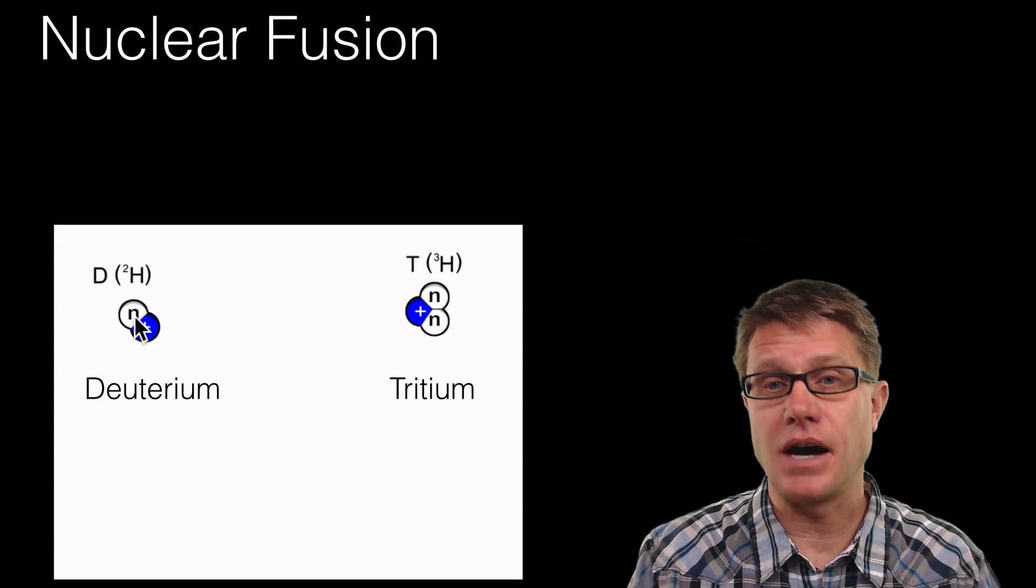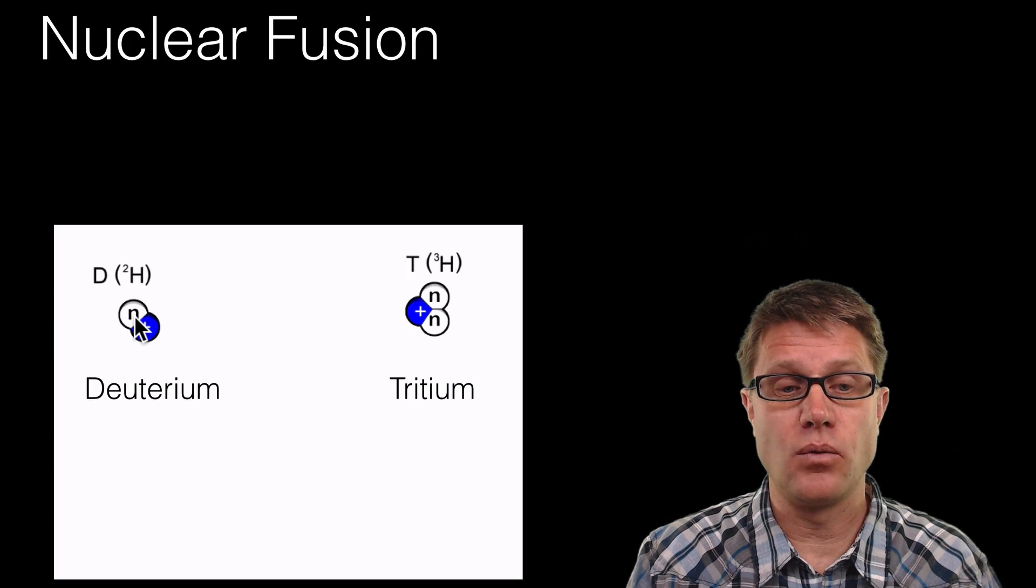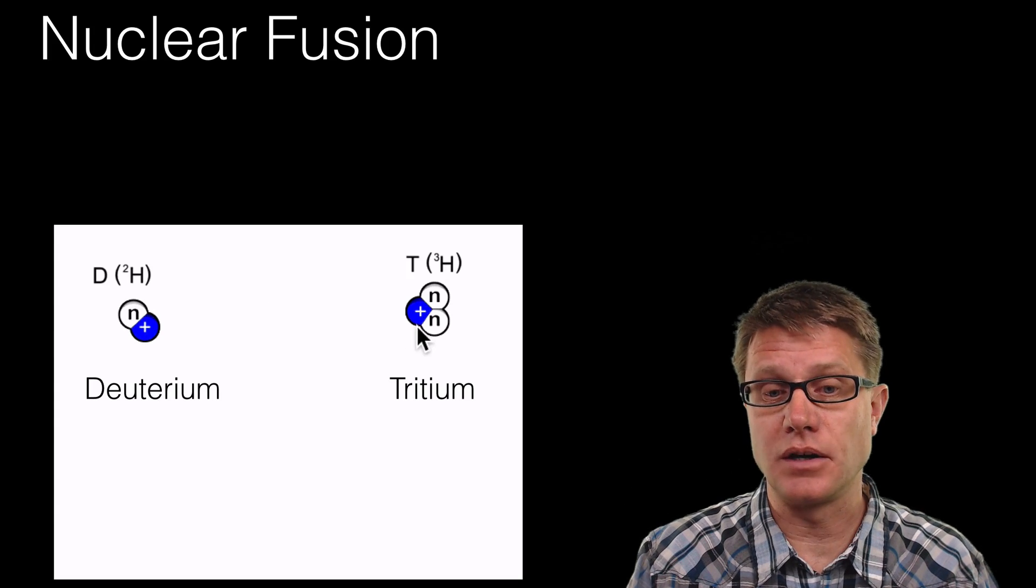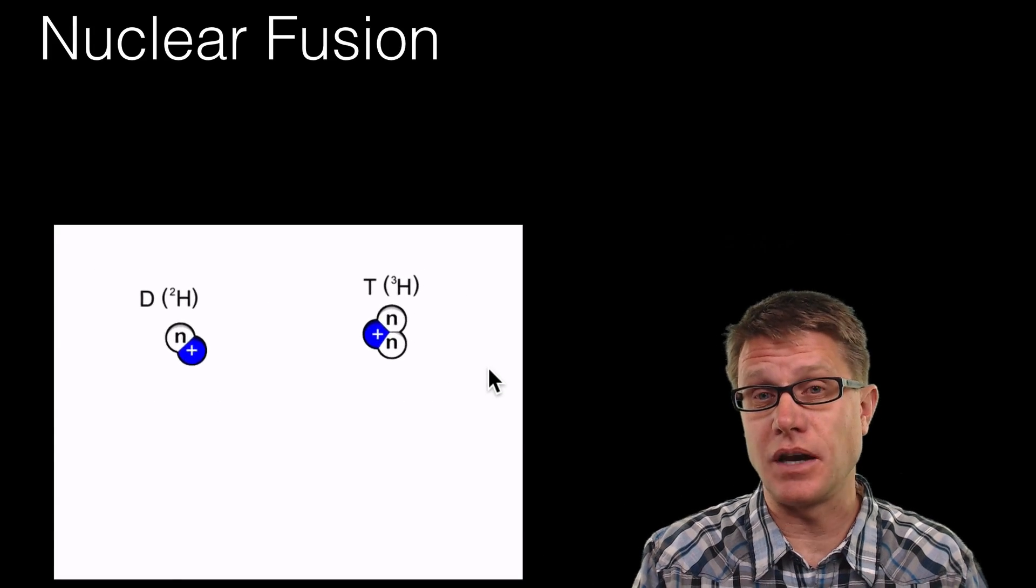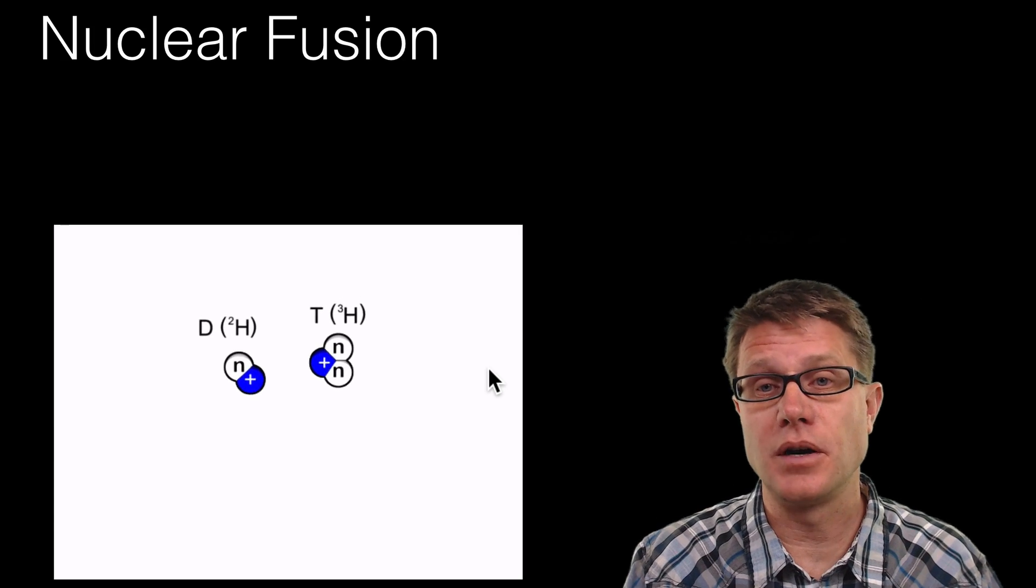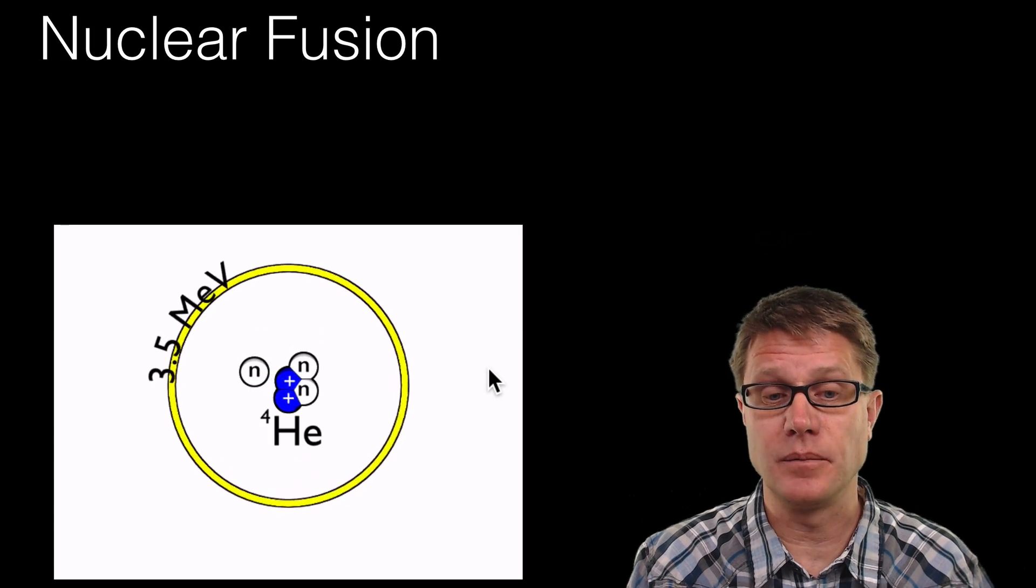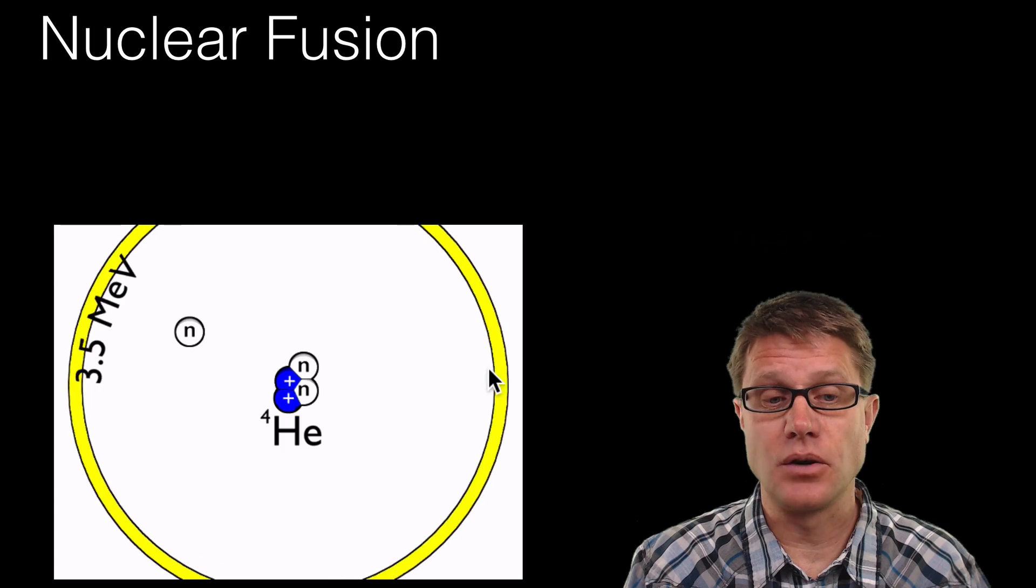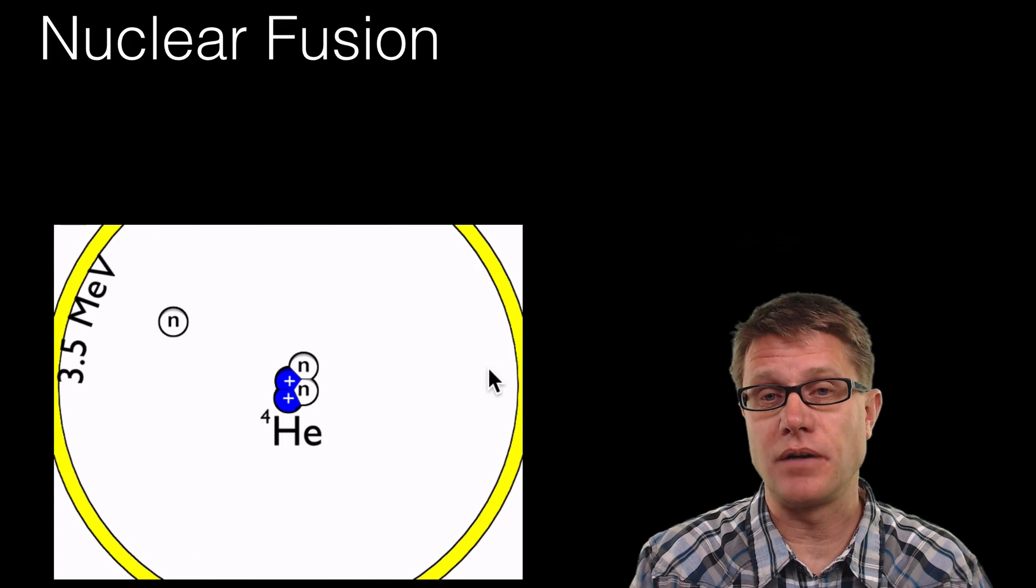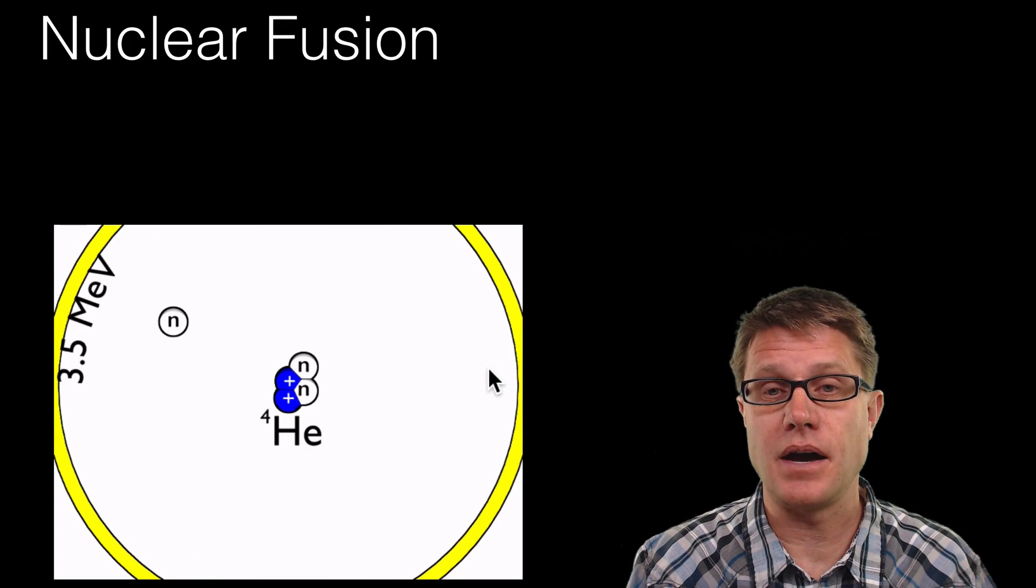And so if we were to take one that has one extra neutron and one that has two, those can be fused together in the sun. And we form a new nuclei. We form a new atom. We form helium. And so we give off one neutron and we give off a huge amount of energy. That is the energy that you are utilizing right now. So let's make sure that we have conservation.